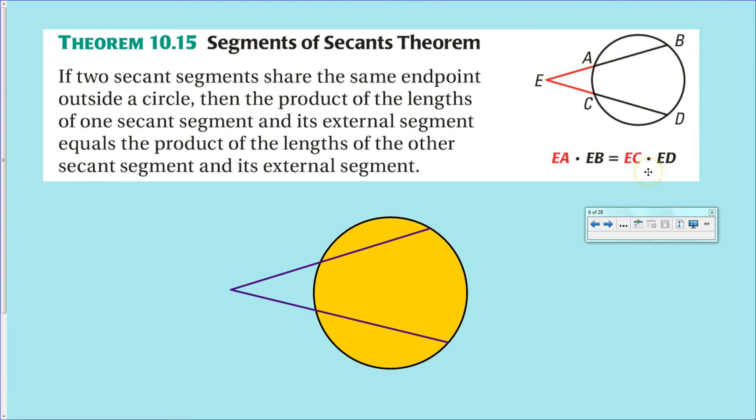Now, the trick here is on this theorem and the next theorem, we don't talk about each individual segment. So, we don't talk about EC and CD. We talk about the short segment and the entire segment. So, EC times ED. So, the short segment times the entire segment. Set that equal to the short segment times the entire segment, like so.